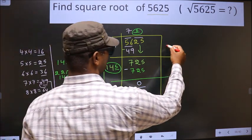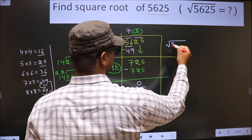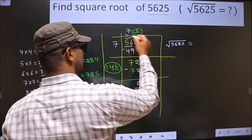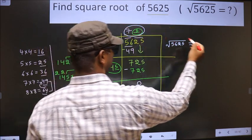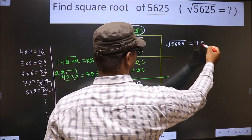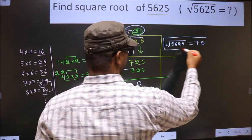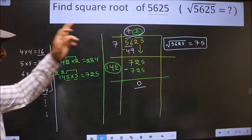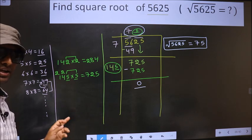And the square root of 5625 is this number, that is 75. So this is our answer. Am I clear?